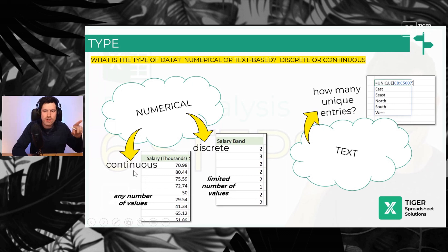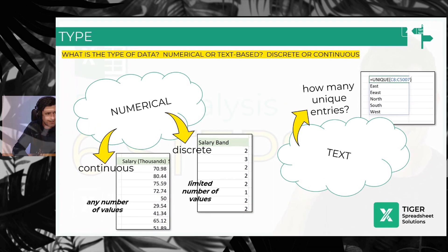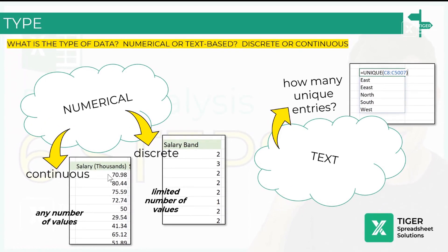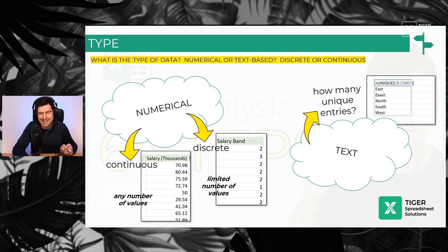Compare that to continuous data. Continuous data could be any value really. So 70.98, 75.59, 29.54, often involving decimals and decimal places. This kind of data is not one of a limited number of values, is it? So this kind of data we call continuous. Why is it important?